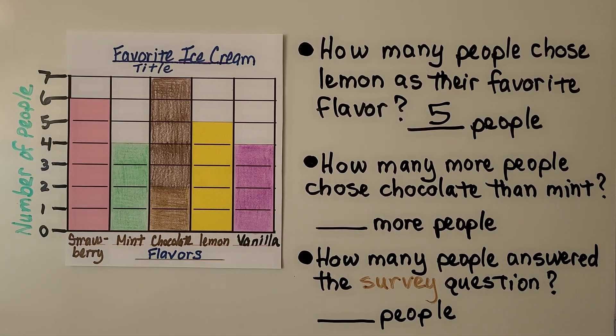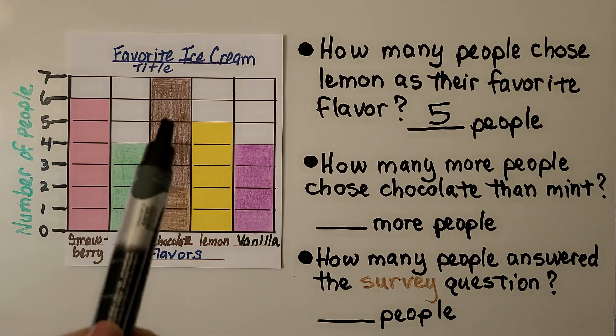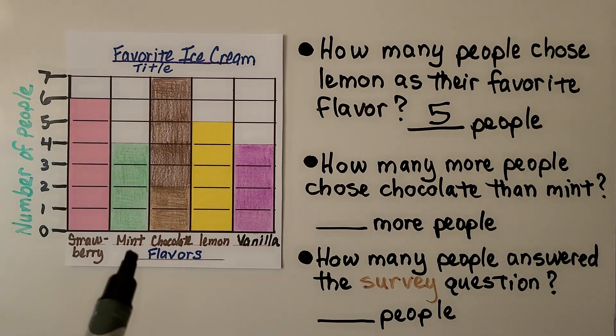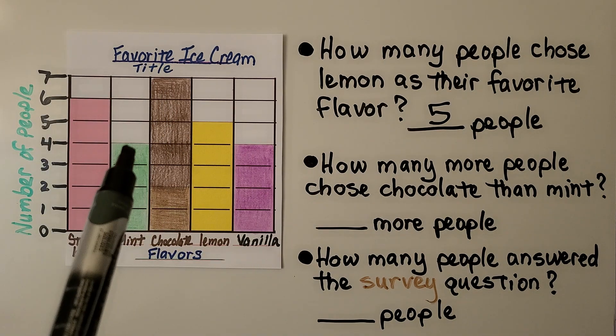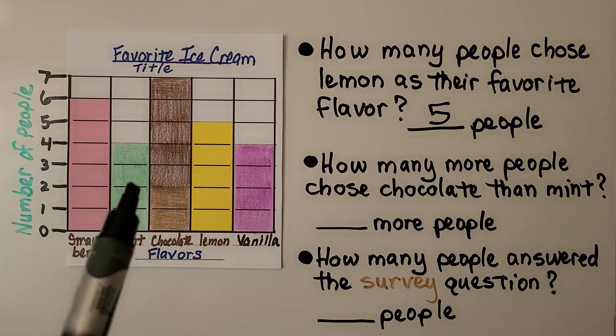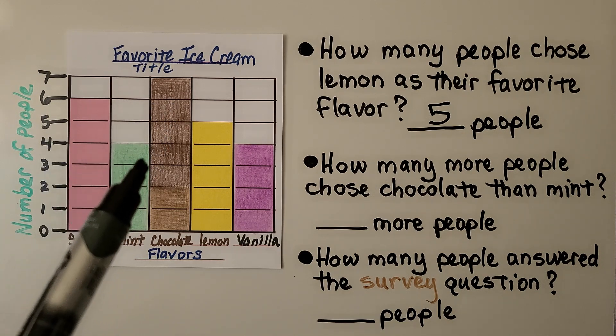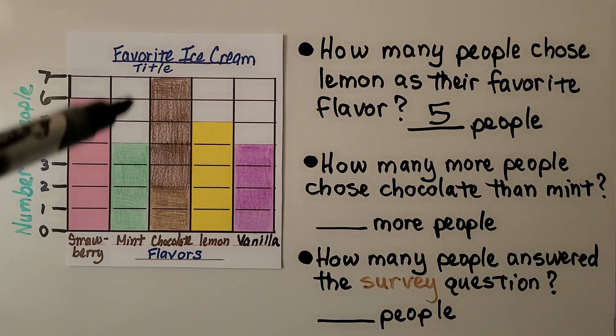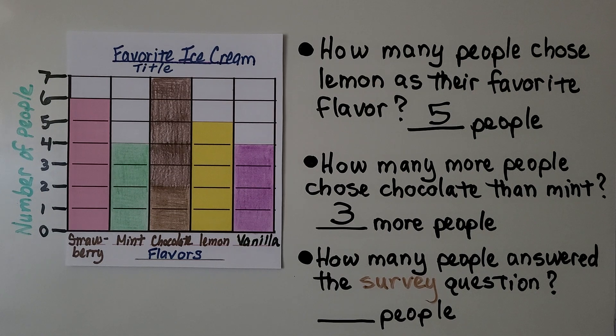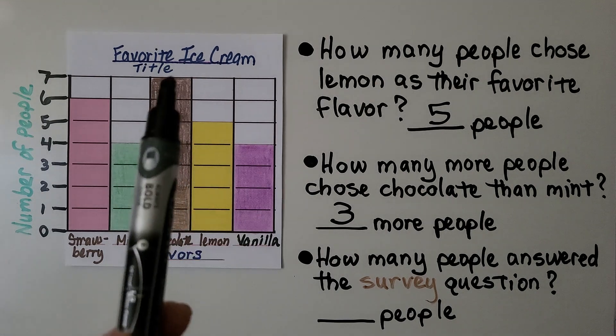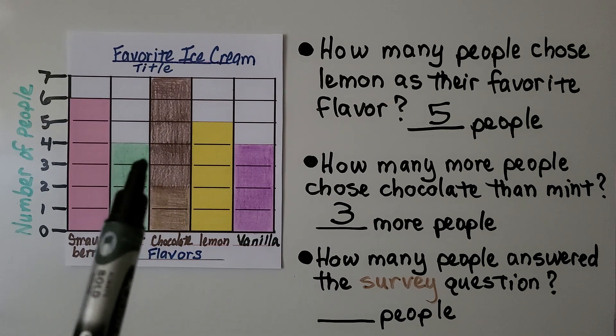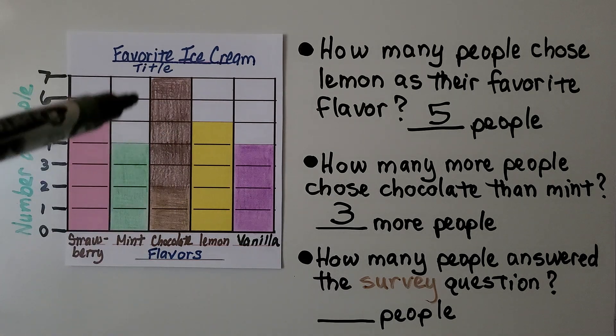And how many more people chose chocolate than mint? We look at chocolate. We follow it up to the top of the bar. We see that's at seven. We look at mint. We follow it up to the top of the bar and see that's at four. We need to find the difference between seven and four. And we can see on the bar graph there's a difference of three. And we could use subtraction. Since chocolate is seven and mint is four, we could do seven minus four. And that would equal the difference of three.